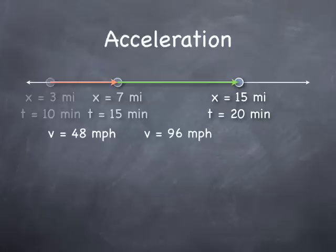The average velocity of the second leg of our journey, the green arrow, is 96 miles per hour. I know this because in the first leg we went 4 miles in 5 minutes, and in the second leg we went 8 miles in 5 minutes, so we're going twice as fast.